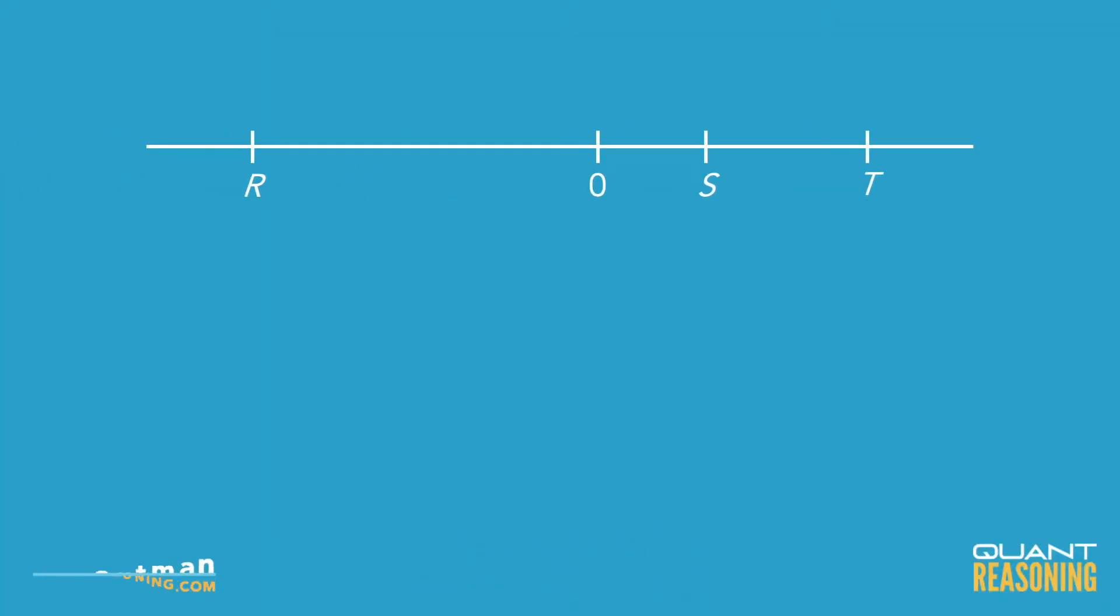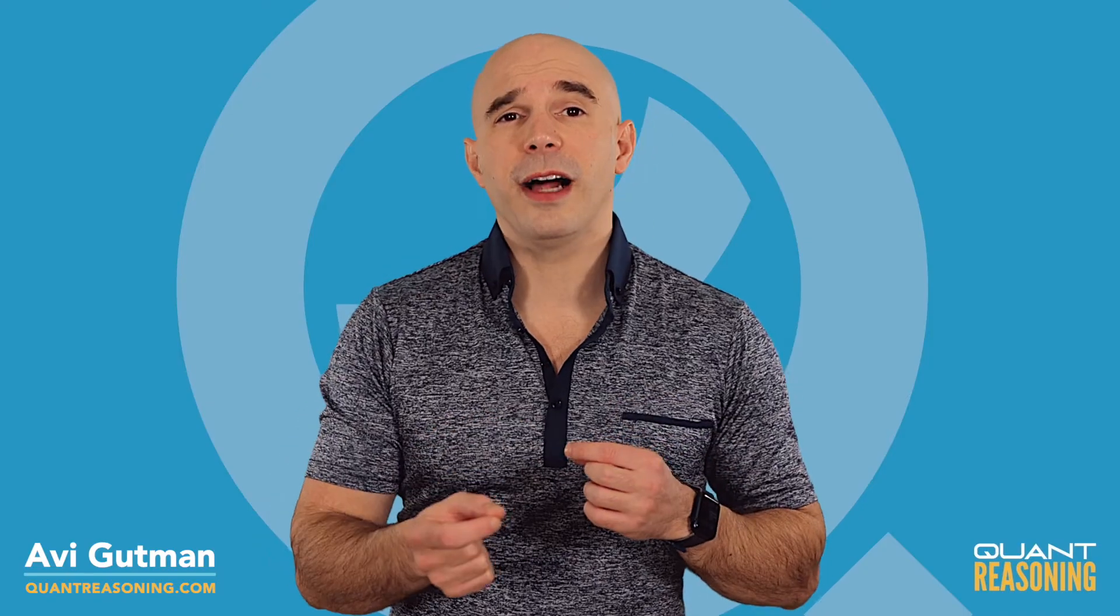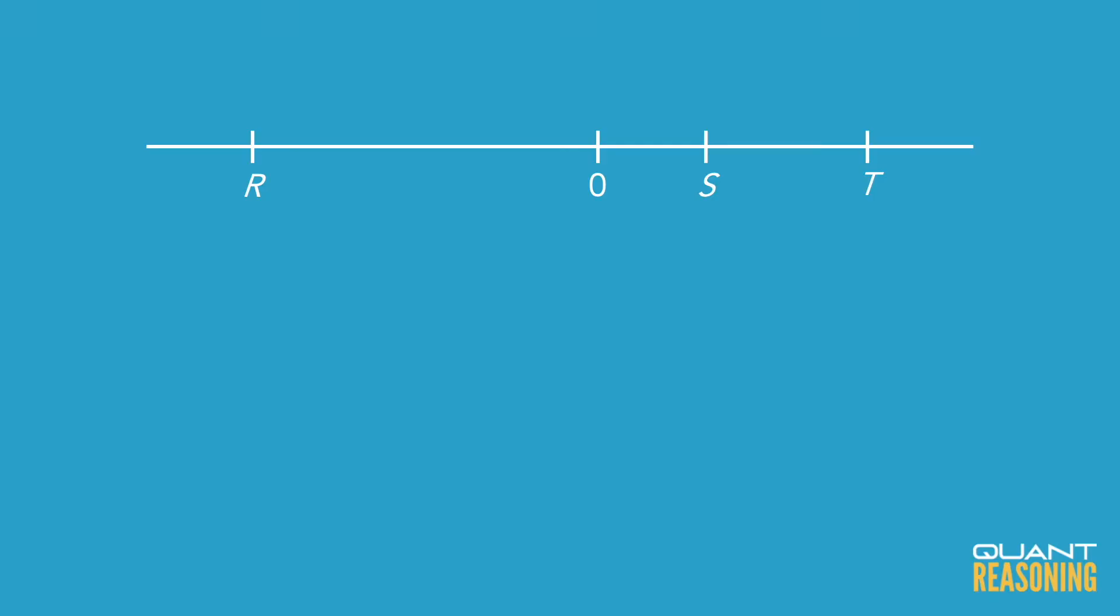Now the question talks about the absolute values of r, s, and t. As a reminder, an absolute value describes how far away from 0 something is. This means that lowercase s is